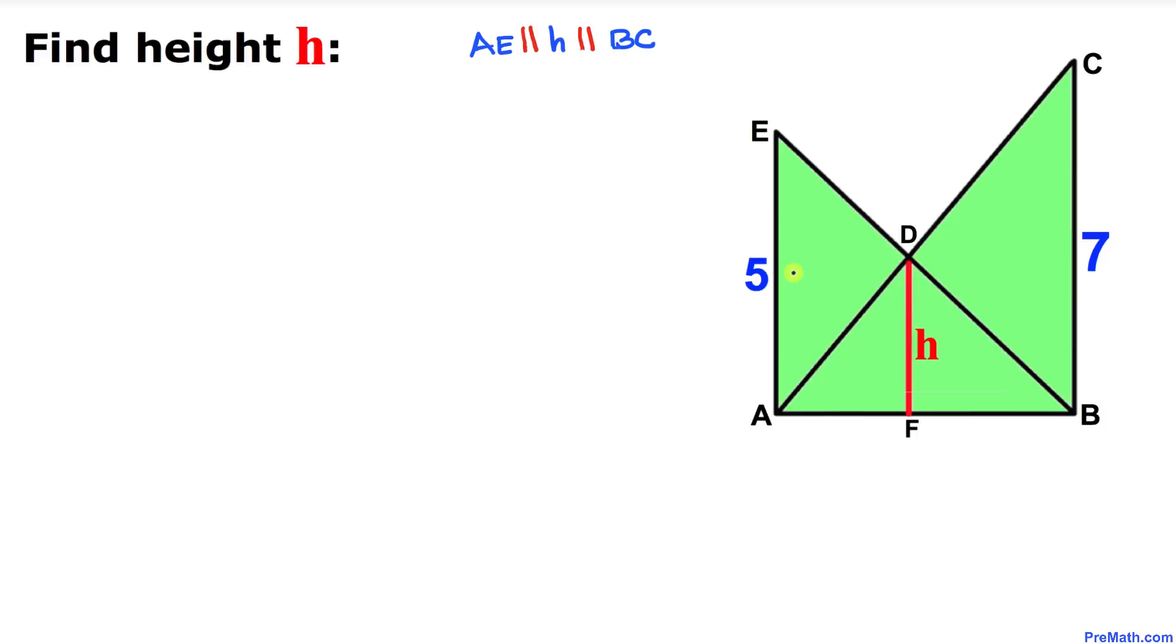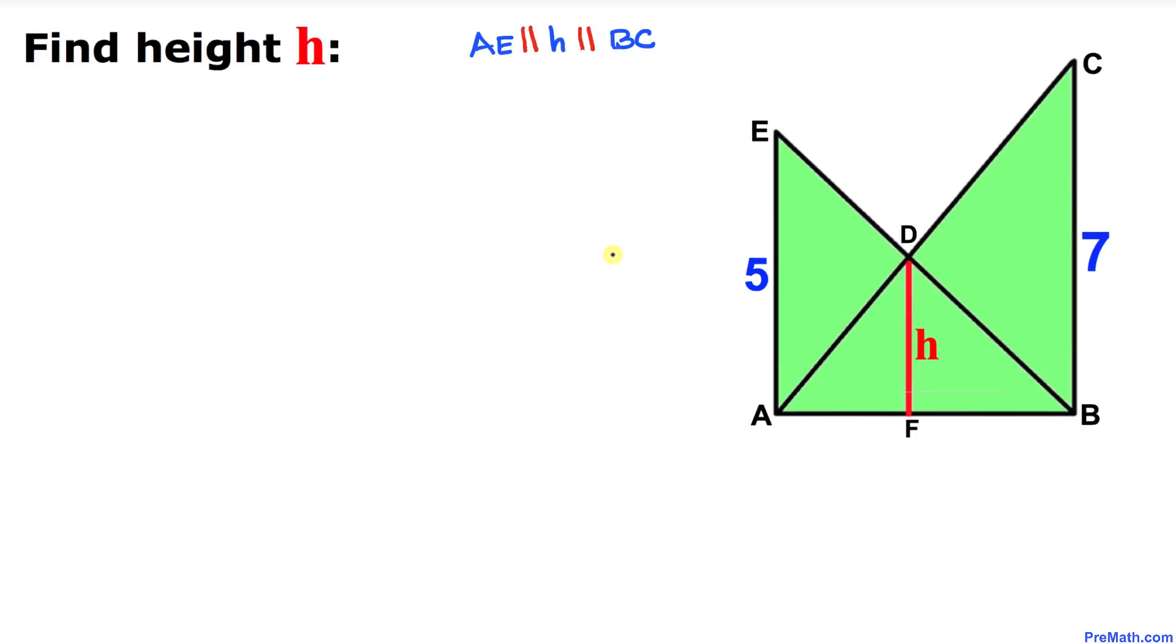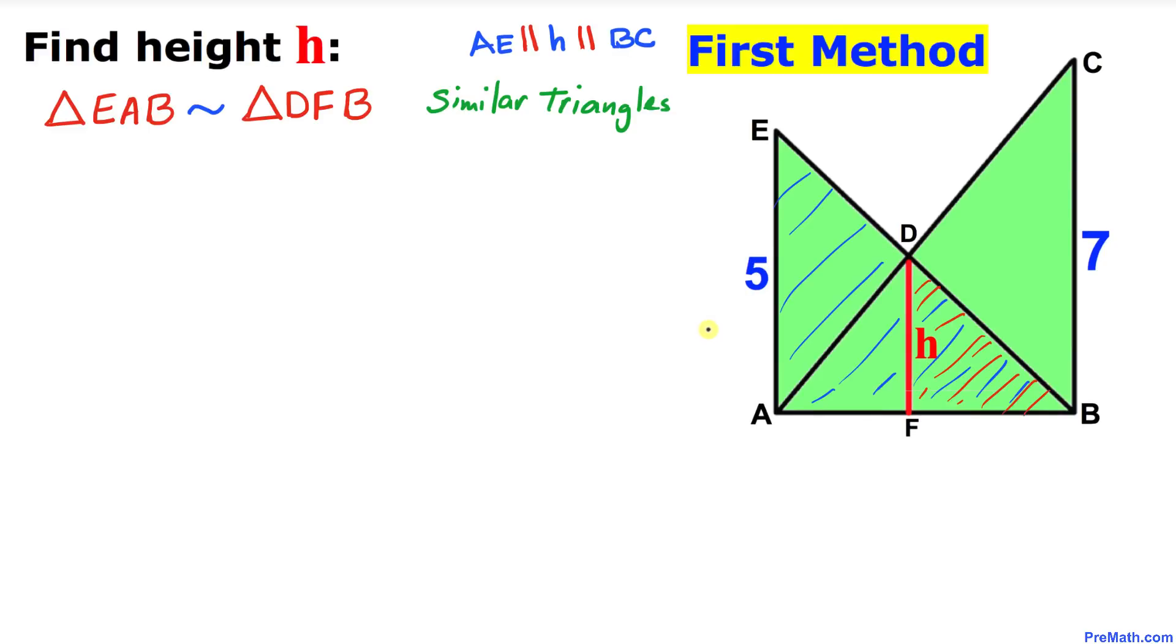The height of two walls are 5 and 7, and now we are going to calculate the height H. In this video tutorial I will show you two different approaches to solve this problem. So let's get started with the solution, and here's our first method.